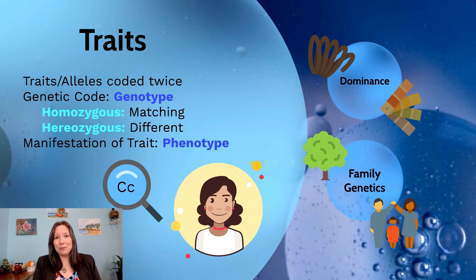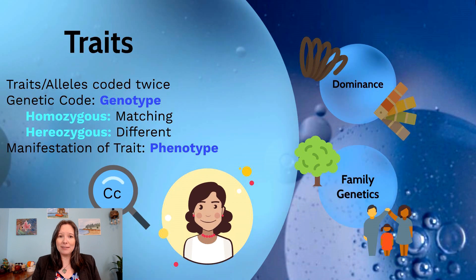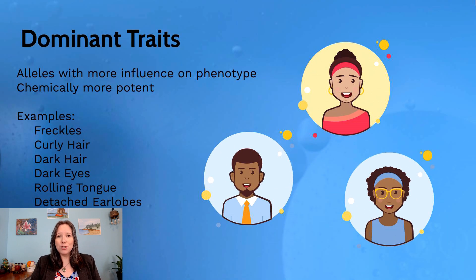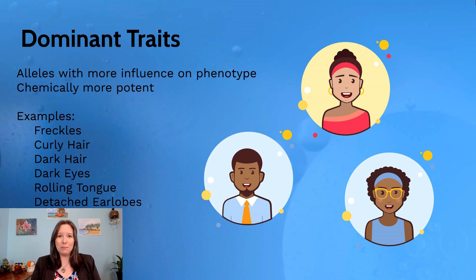What happens if you have heterozygous traits? How do we determine which one will actually influence your phenotype the most? In order to understand that, we have to talk about dominance. Dominance refers to, at the molecular and chemical level, which alleles are more potent and have a stronger influence on the phenotype. Some alleles are always going to be more influential — they just seem to be chemically more potent.